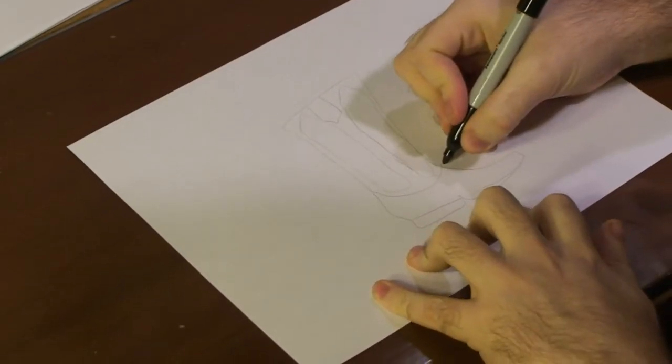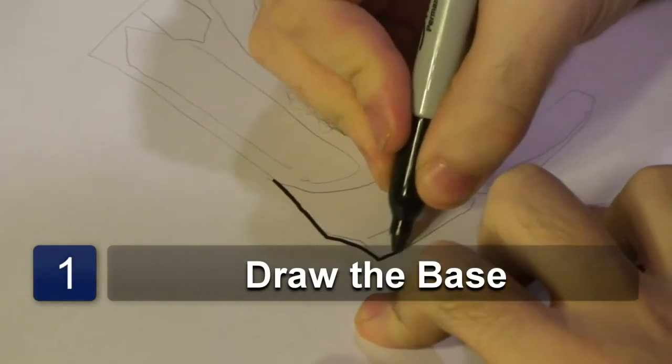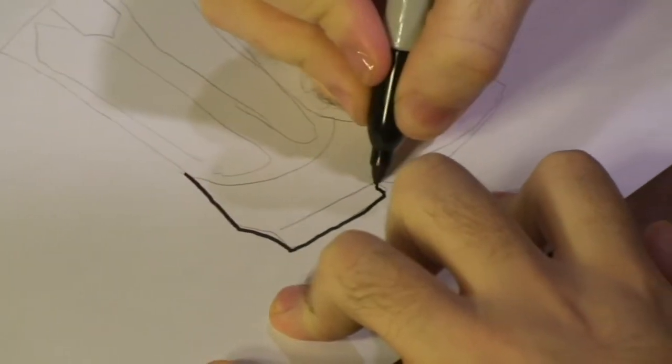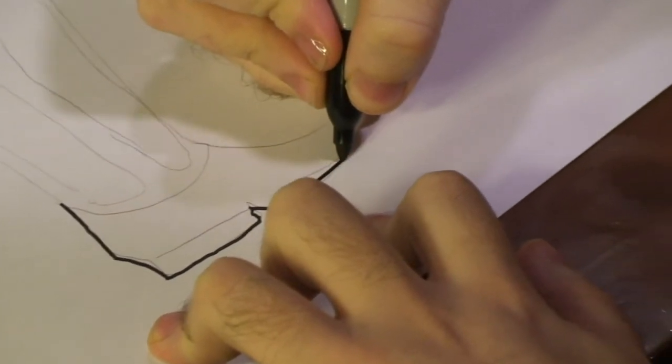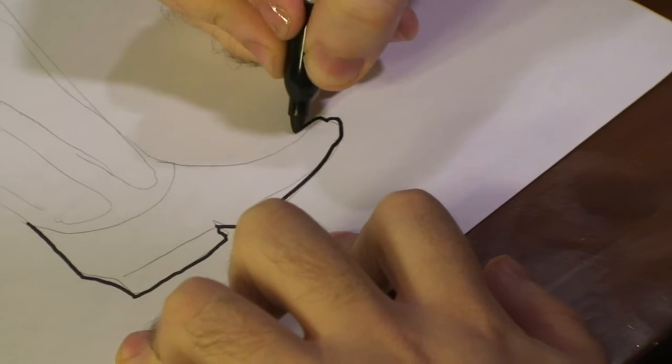Now, to begin with drawing our cowboy boot, which is a Western boot, I'm going to first start with the base, the heel, a long bit of the foot itself, and then add the toe part.